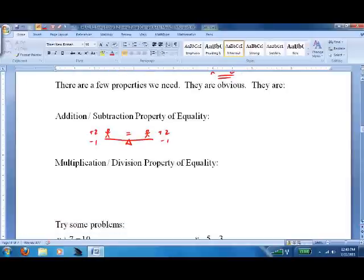Same thing applies for the multiplication and division. Again, if we multiply by 3, then we have to multiply by 3. If we divide by 2, then we have to divide by 2 on the other side. That's about it. They're called addition-subtraction property of equality and multiplication-division property of equality. You probably don't need to memorize that.